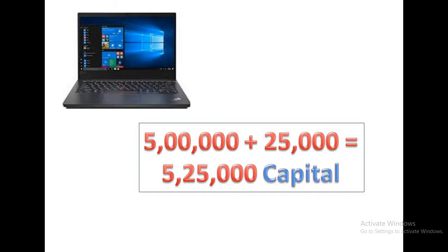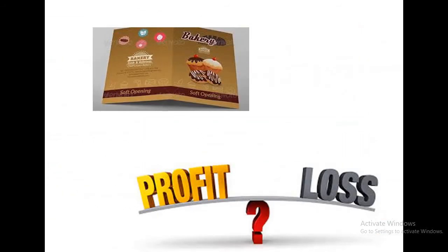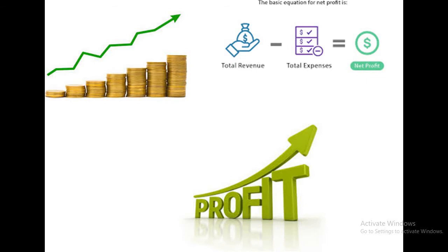The main aim of every business is to earn profit. The bakery got inaugurated and started doing well. I started writing all daily expenses and income in a diary. After one year, I wanted to check whether I got profit or loss. I added all my income and deducted all my expenses — that is how I got my profit. This year was very good and I got profit.